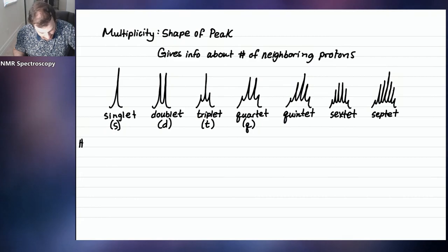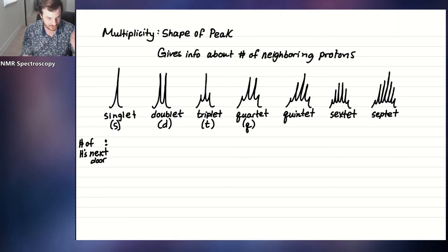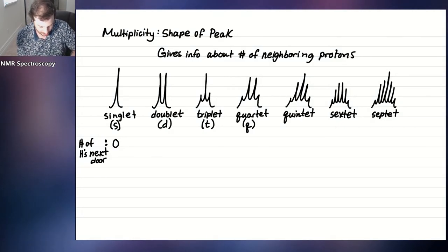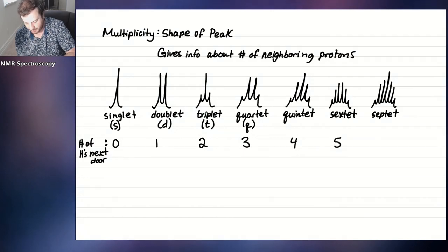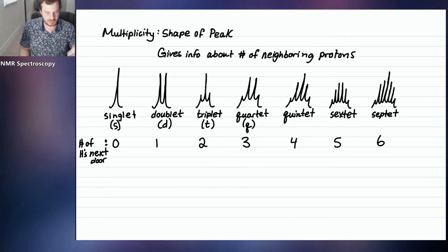What the shape tells you is the number of hydrogens on the carbon next door — the next-door neighbor. A singlet means no hydrogen neighbors. A doublet means one neighbor. A triplet means two neighbors. A quartet means three. A quintet means four. A sextet means five. A septet means six. It's always the number of neighbors plus one that gives you the signal pattern. So zero plus one equals a singlet, one plus one is a doublet, and so on.